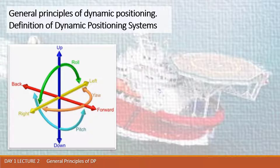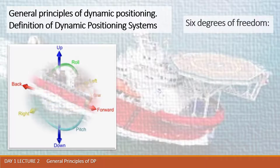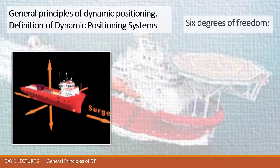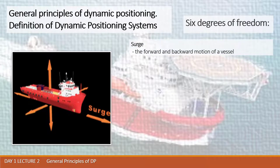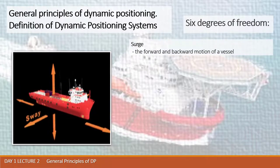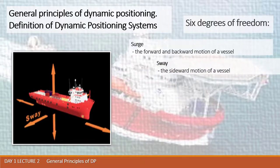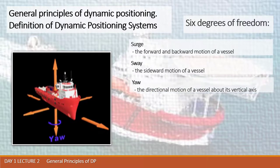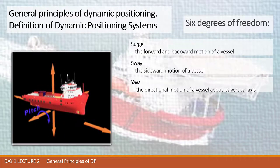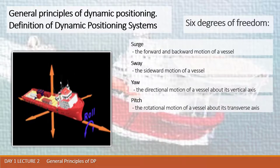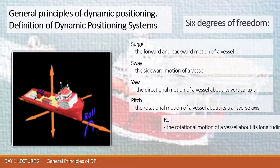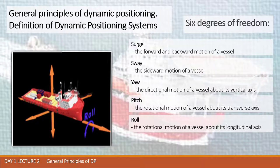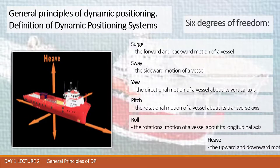First, we have movement on the surge axis — surge is the forward and backward motion of a vessel. Sway means the sideward motion of a vessel. Yaw is the directional motion of a vessel about its vertical axis. Pitch is the rotational motion of a vessel about its transverse axis. Roll is the rotational motion of a vessel about its longitudinal axis. Heave is the upward and downward motion of a vessel.